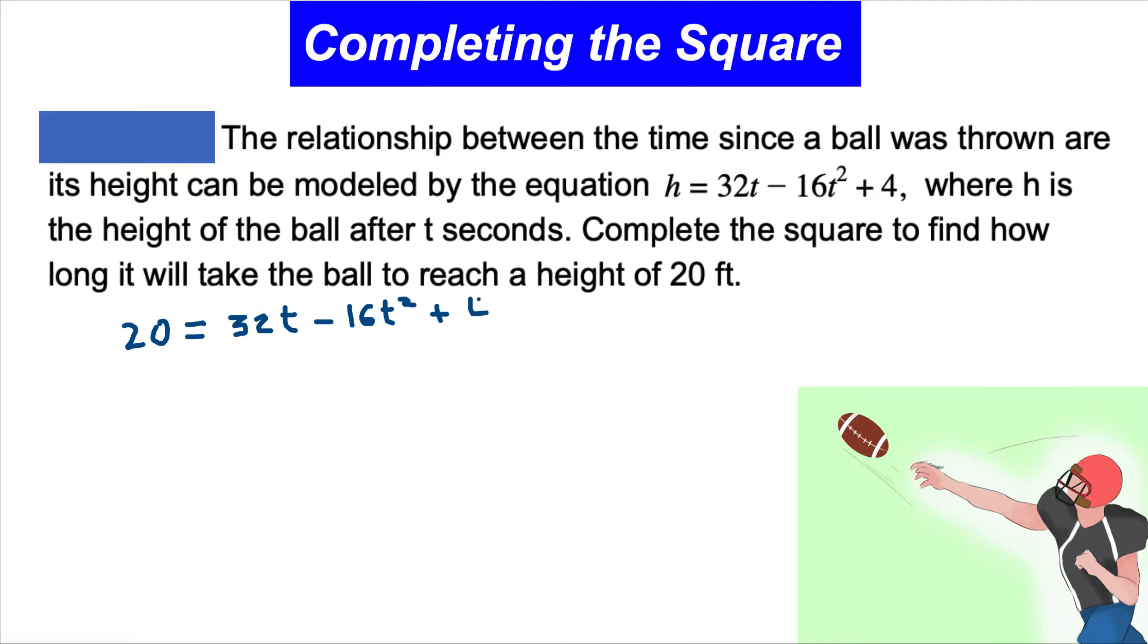Before we go further, we should subtract 4 from the entire equation. Subtracting 4 from both sides, we get 20 - 4 = 16 on the left, which equals 32t - 16t² on the right.